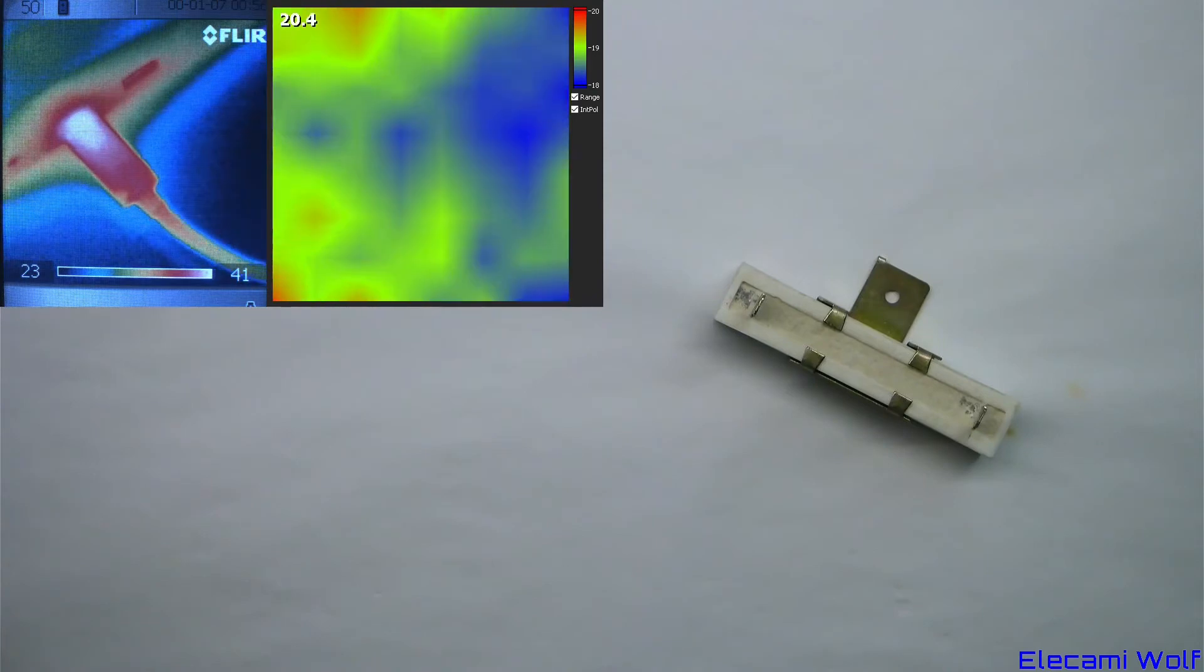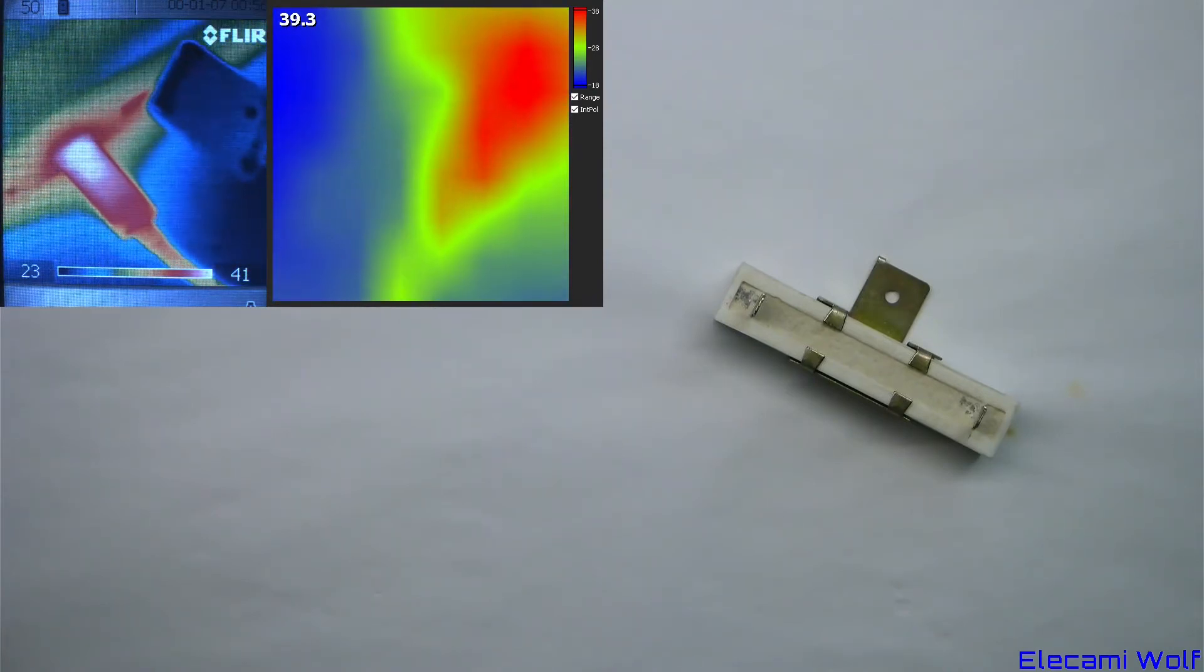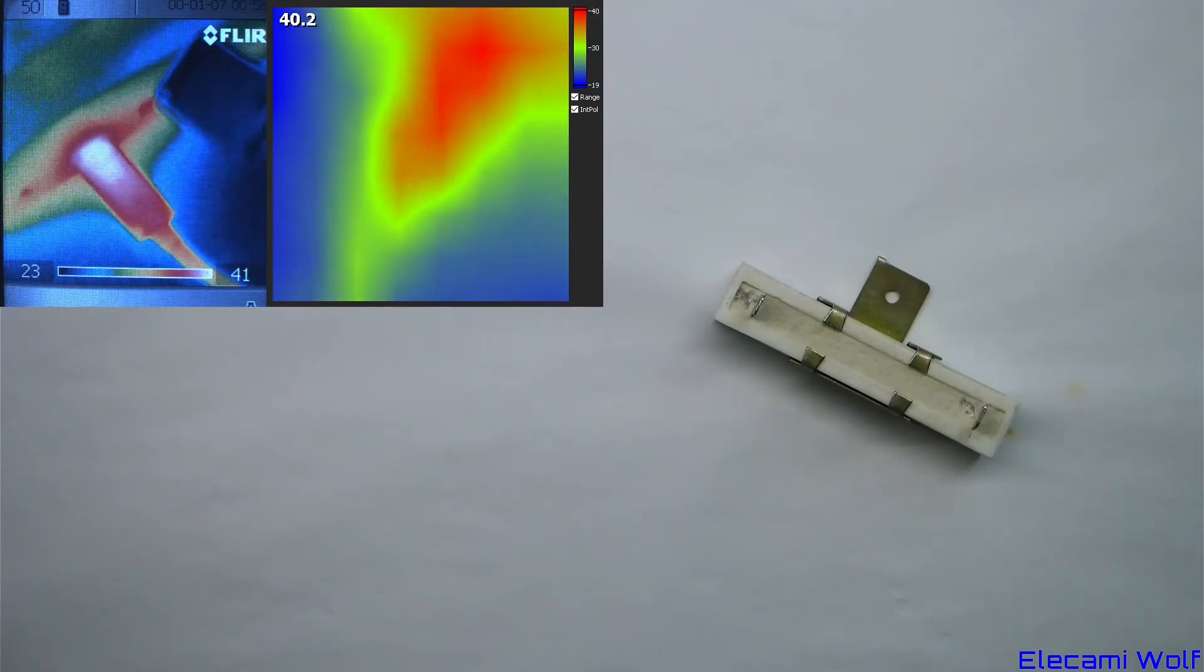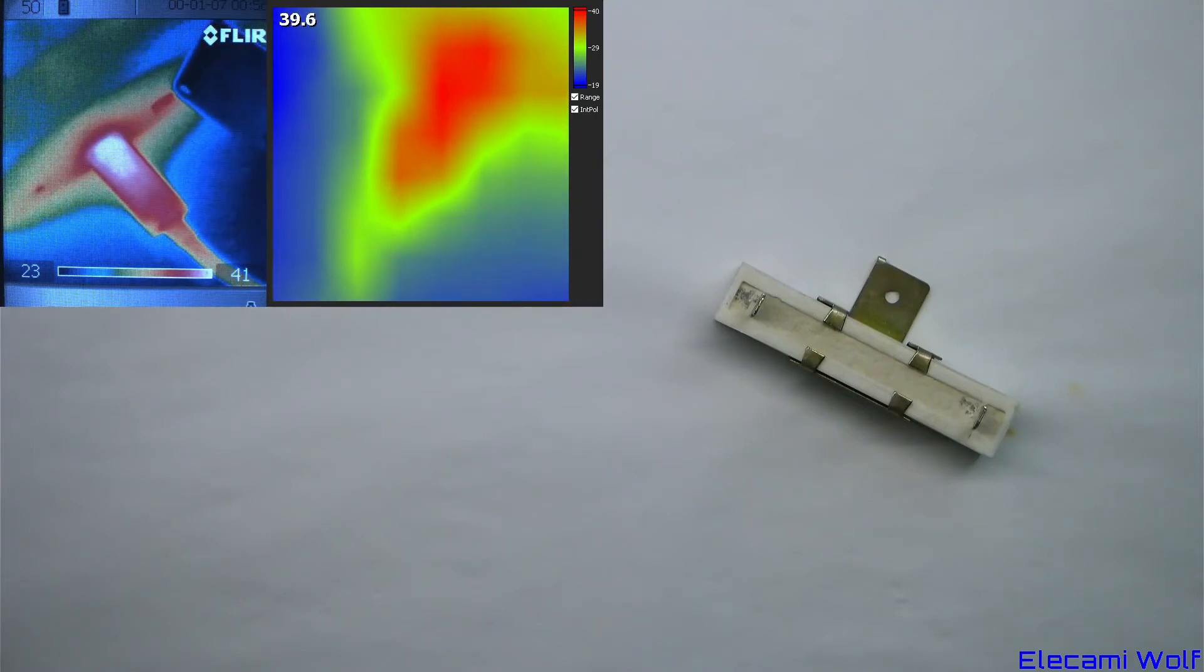But if the GridEye is put a lot closer, temperature is very comparable. That will be because the hot spot now covers at least one whole pixel on the GridEye.